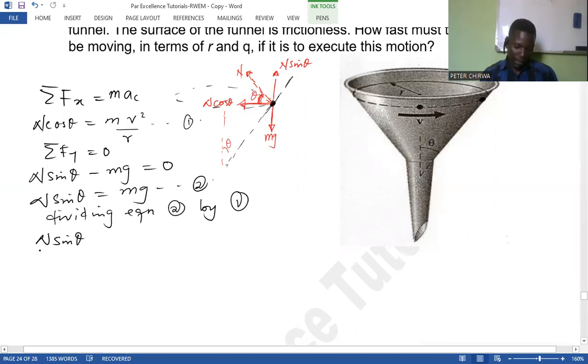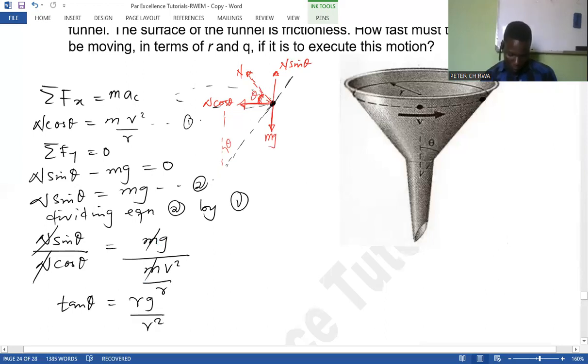So we're going to have n sin theta over n cos theta. That n is just the normal force, mind you mg. And then we have that. So that and that goes sin theta over cos theta, we get tan theta equal to that. And that will go of course, and then we are going to have rg over v squared.